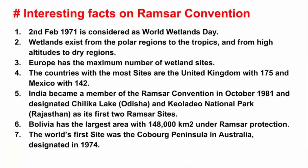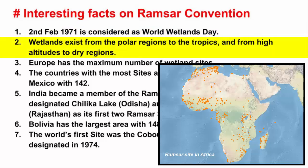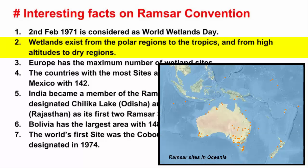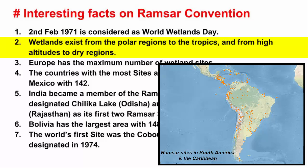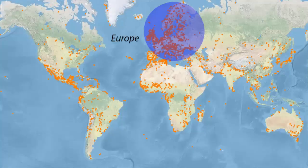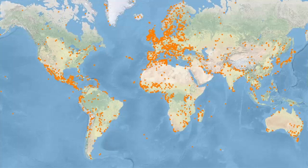Now let's look at some interesting facts about the Ramsar Convention. The 2nd of February is considered World Wetlands Day — it is the same day on which the Ramsar Convention Treaty was signed in 1971. Wetlands exist in every country and in every climatic zone, from the polar regions to the tropics and from high altitudes to dry regions. Europe has the maximum number of wetland sites, and the countries with the most sites are the United Kingdom and Mexico.